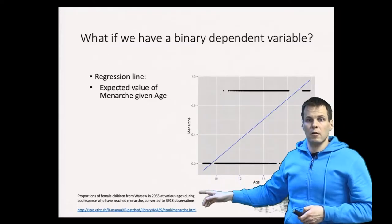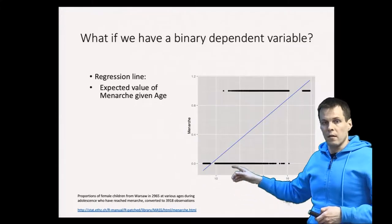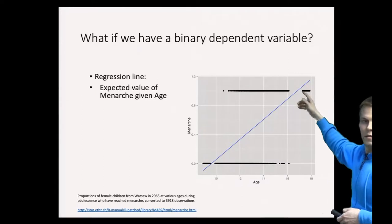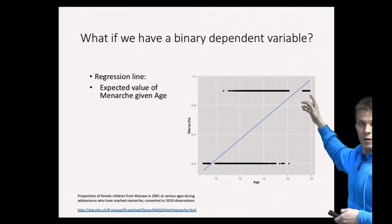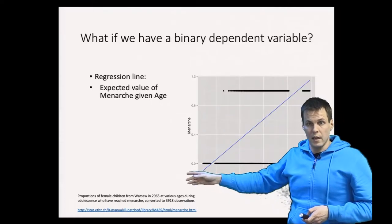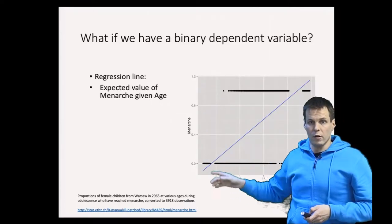We can see here that girls at age 10 normally don't have had the first period, and then girls when they are 18, pretty much everyone has had the first period. We want to explain this relationship between age and menarche using regression analysis.